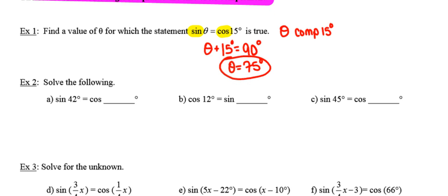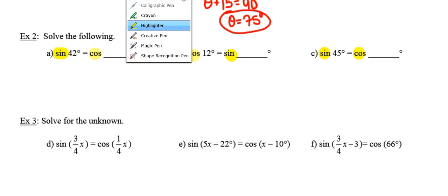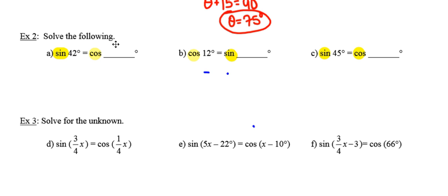In example two, they're asking us to solve the following problems. And again, notice that in each and every one of these instances, they're comparing sine of one angle to cosine of another. Well, the only way those two can be true is if those two angles are complementary angles. So really this is just a sneaky little way of asking us to find the complement. So this is going to be 38 degrees. Why? Because 42 and 38 sum up to 90.